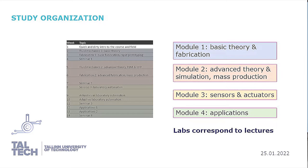First we have module 1 about basic theory and fabrication. Module 2 covers advanced theory, simulation, and mass production of BiOMEMS devices. Module 3 is about sensors and actuators and the network of these. Module 4 is applications of BiOMEMS devices. There are also labs corresponding to these lectures, and this will be the course schedule.